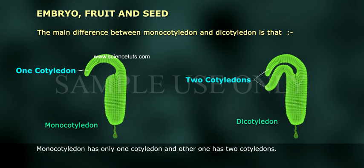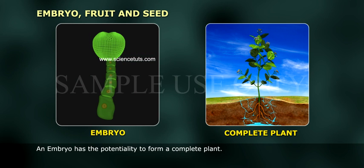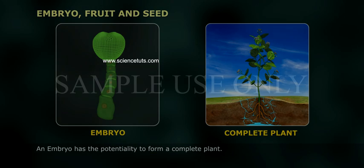The main difference between monocotyledon and dicotyledon is that a monocotyledon has only one cotyledon, while a dicotyledon has two cotyledons. An embryo has the potentiality to form a complete plant. Thank you.